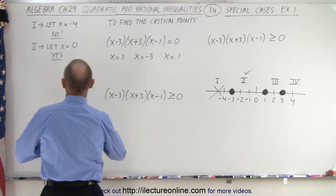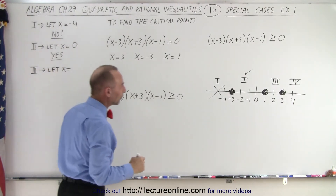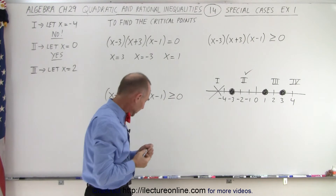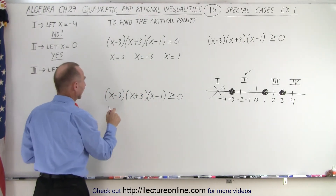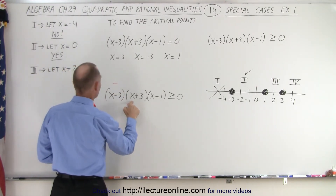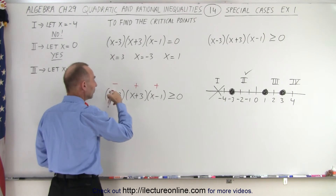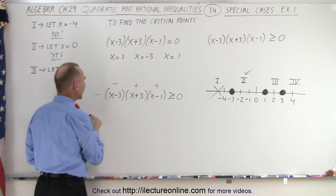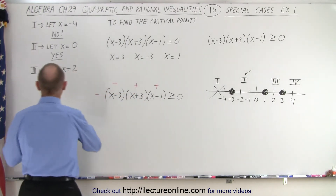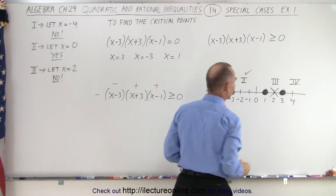Now we try region 3. Let x equal 2. Plugging in: 2 minus 3 is negative 1 (negative), 2 plus 3 is 5 (positive), and 2 minus 1 is 1 (positive). We have one negative and two positives — when we multiply them all out, the whole thing is negative. A negative cannot be bigger than zero, so region 3 does not satisfy the inequality and is not included in the solution set.